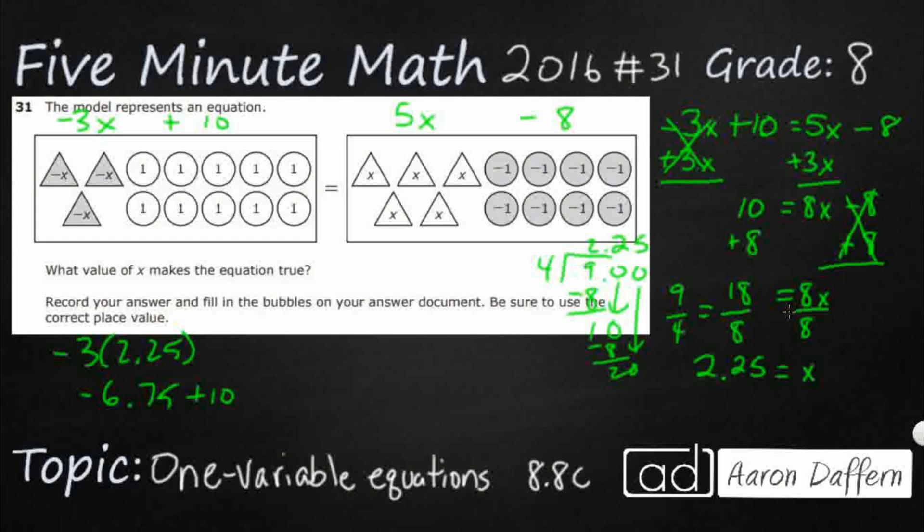Equals 5x, so that's 5 times 2.25, so that's going to be 11.25 minus 8, and look at that, there we go, equals 3.25.